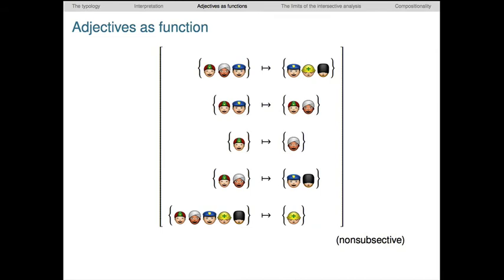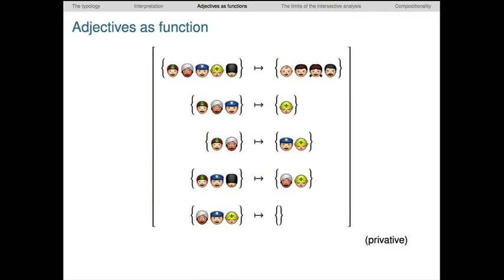Here's a non-subsective adjective. The modified set is sometimes a subset of the input, as in the bottom line. But it often isn't, hence this weak designation. Finally, here's a privative adjective. The output is always disjoint from the input.